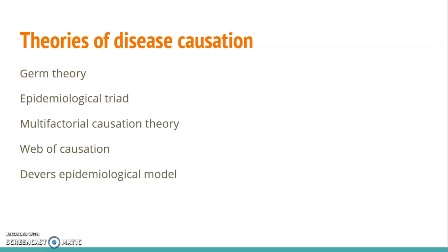There are a lot of theories discussed related to disease causation. Among the popular disease theories we will be discussing here: the first one is germ theory, epidemiological triad, multifactorial causation, web causation, and diverse epidemiological models. We will see them one by one.